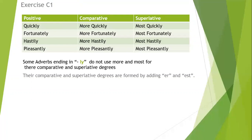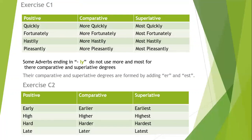Now let's come to exercise C2, which is related to this rule. You are given positive degrees and you have to formulate their comparative and superlative degrees by adding '-er' and '-est' at their end — not 'more' and 'most'. For example, 'early' ends in '-ly' but its comparative is 'earlier' and superlative is 'earliest'. Other examples: 'high', 'higher', 'highest'; 'hard', 'harder', 'hardest'; 'late', 'later', 'latest'.